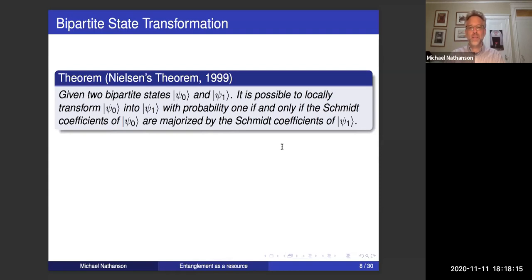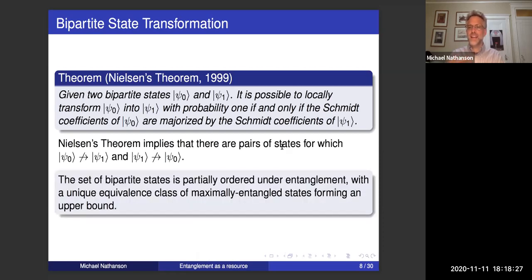Nielsen's theorem gives us a very clear condition in the bipartite case to show when we can transform one state into another, but it also implies very clearly that there are incomparable pairs — that this is not a complete ordering. Bipartite states are partially ordered under entanglement, with a unique equivalence class of maximally entangled states that forms an upper bound.